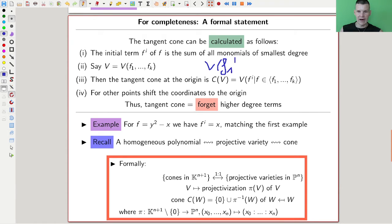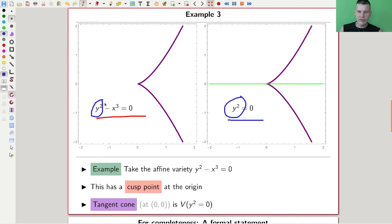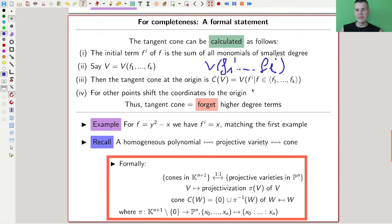There's one technical catch - it's not quite true. What I usually would like to write is that the cone equals f1 to the i up to f4 to the i. That's not quite true - it's just true if you have one generator in your ideal. In all of my examples it was true. I really just need to take the equation, take its initial term, and that's my equation for the cone.